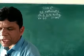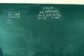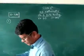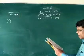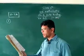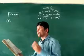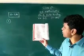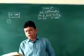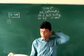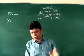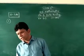Now start question number 1 of exercise 9.3. See your book please. The bar graph given alongside shows the amount of wheat purchased by government during the year 1998 to 2002. This is the bar graph which we have given you.